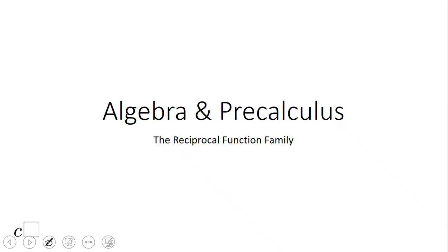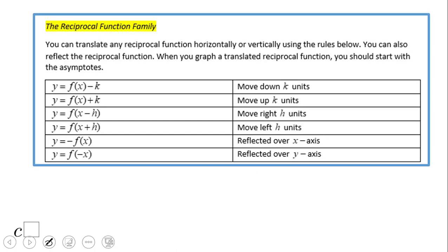Welcome or welcome back on C squared. In this video clip we're going to talk about the reciprocal function family. All right, so the reciprocal function is f of x equals 1 over x. These here are functions related to the 1 over x. This one is move down k units, move up k units, move right, move left, reflected over the x-axis, reflected over the y-axis.